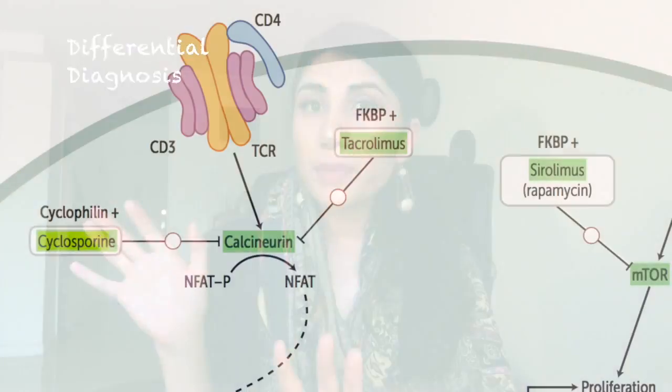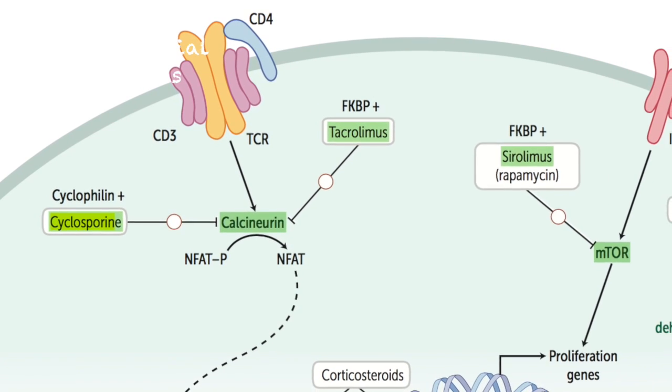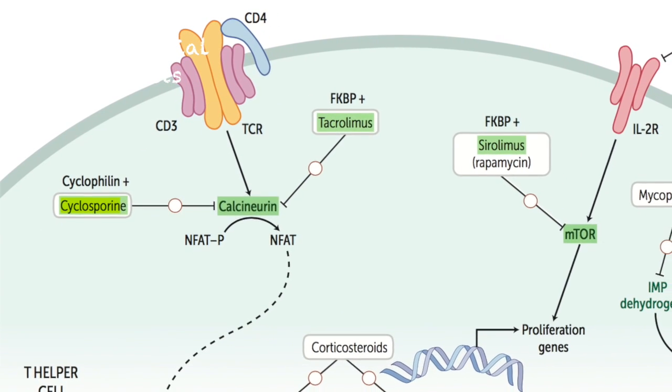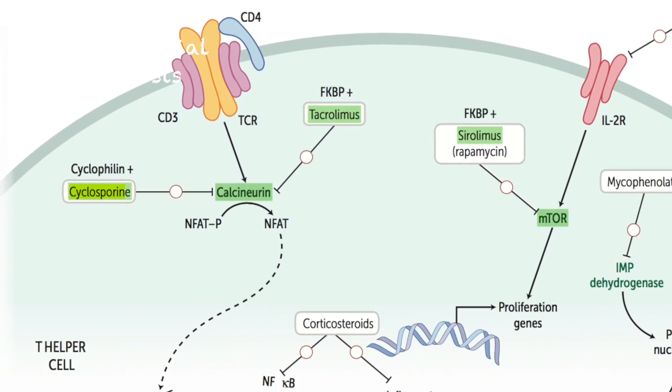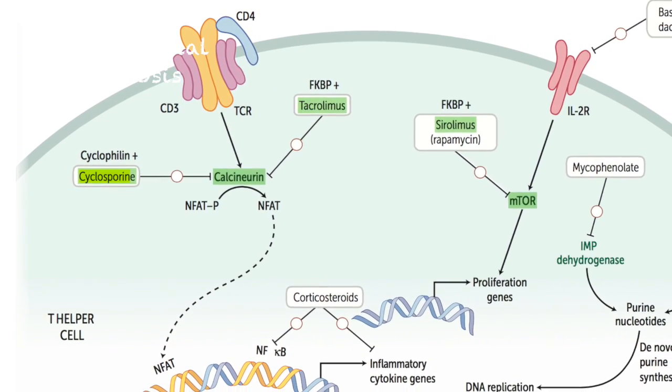You would not pick tacrolimus, because hirsutism and gingival hypertrophy are not seen with tacrolimus — that's how you differentiate the two by their adverse effects. Tacrolimus has a very similar mechanism of action, but instead of binding to cyclophilin, it binds to FKBP. It similarly decreases interleukin-2 production, which decreases T-lymphocyte production — it's also an immunosuppressant.